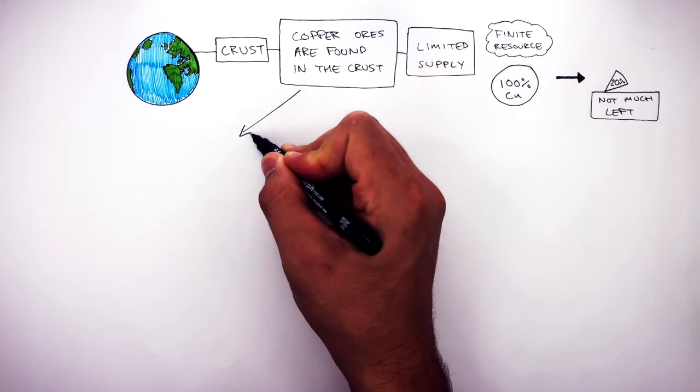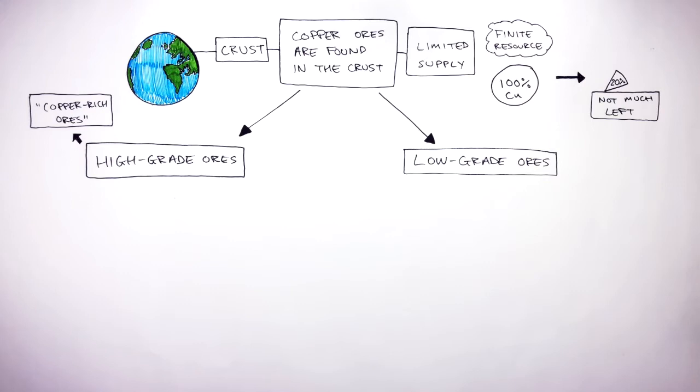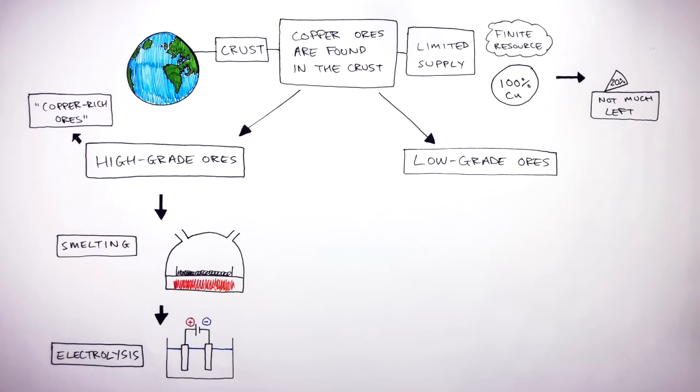There are two types of copper ores: high-grade ores and low-grade ores. High-grade ores, also known as copper-rich ores, have a high percentage of the metal. For high-grade copper ores, smelting and electrolysis are used to extract the metal, whereas low-grade ores have a low percentage of the metal.